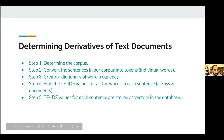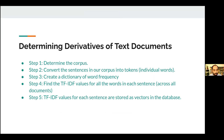For determining derivatives of text documents, there are steps to follow. First, determine the corpus — all sentences and paragraphs across the three documents. Second, tokenize all sentences into individual words as tokens. Third, create a dictionary of word frequencies across the corpus. Steps four and five find the TF-IDF values for all sentences, converting them into vectors through text vectorization. These vectors are then used for comparison purposes.